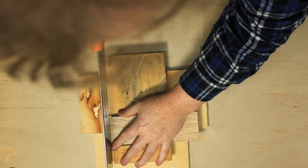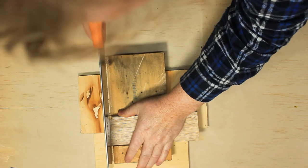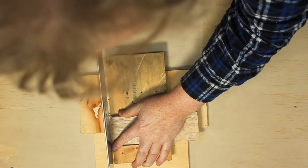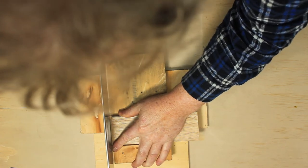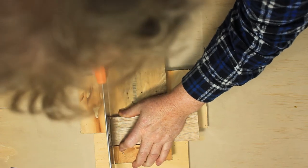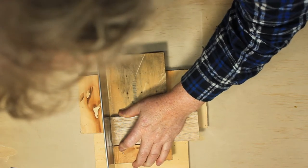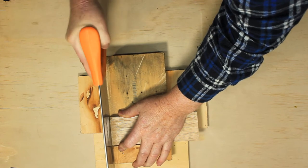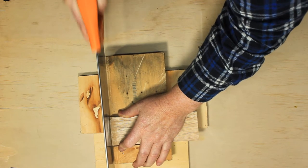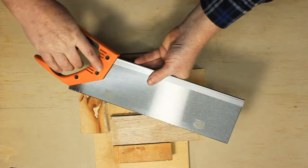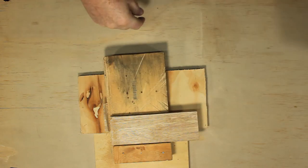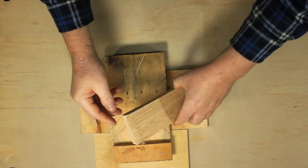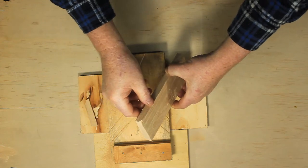I'll use a bench hook and our new tenon saw. As you can see, those nice fine teeth on the tenon saw give a much smoother cut than we'd get with our panel saw.